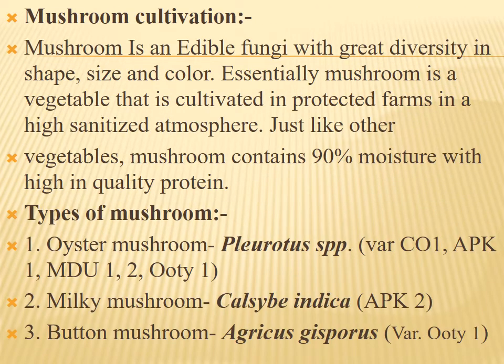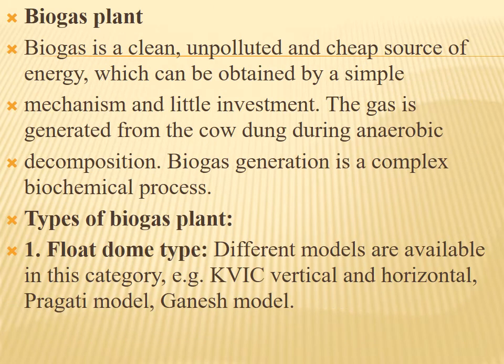Mushroom cultivation: mushroom is an edible fungus with great diversity in shape, size, and color. Essentially, mushroom is a vegetable cultivated in a protected environment in a highly sanitized atmosphere, just like other vegetables. Mushrooms contain 90 percent moisture and are high in quality protein. Types of mushroom include oyster mushroom, milky mushroom, and button mushroom.